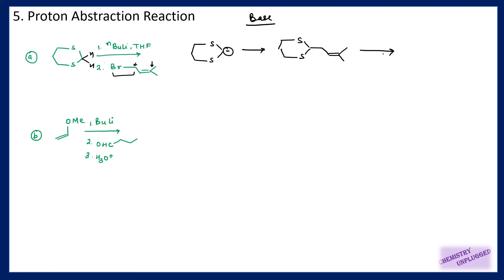I will get this product, and if we are using further HgCl2 and then doing acidic hydrolysis, I will get a carbonyl group attached. I can remove this diyne group and we will get this product. This is a simple example.